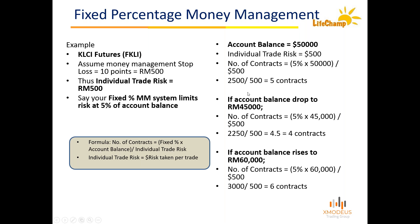Another system, more suitable for smaller account sizes, is fixed capital money management. Here, for every lot traded you need a certain fixed unit capital (FUC). For example, if your FUC is 10,000 ringgit and your account is 30,000 ringgit, you trade 3 contracts.